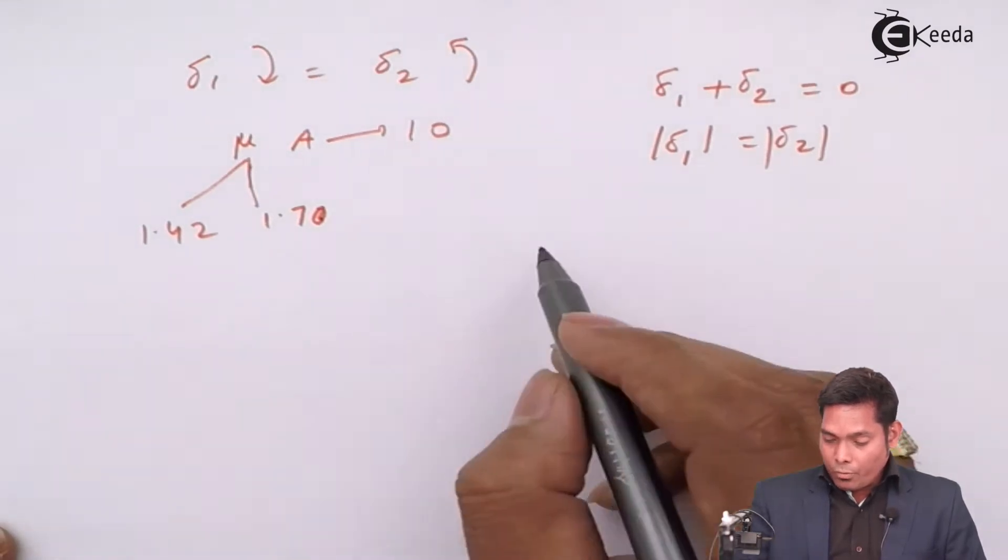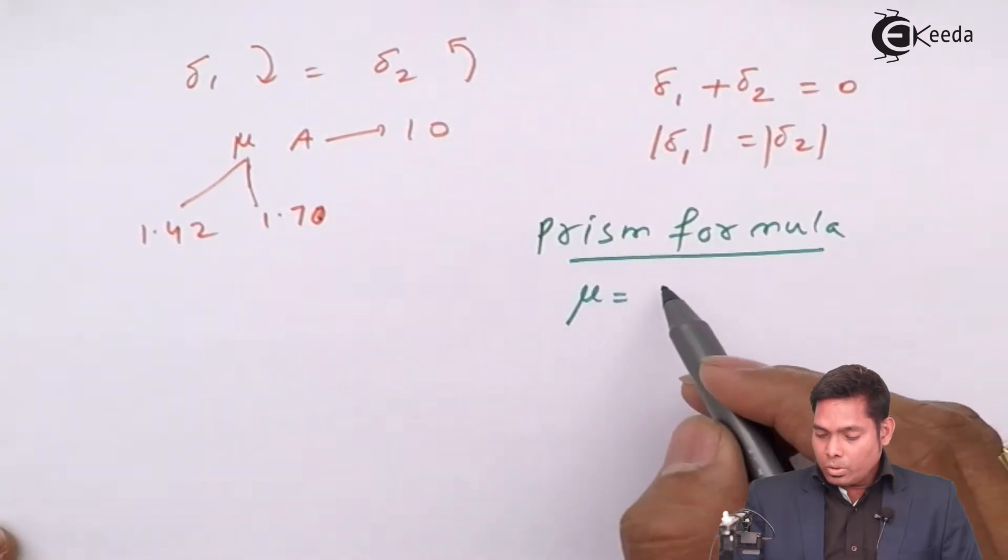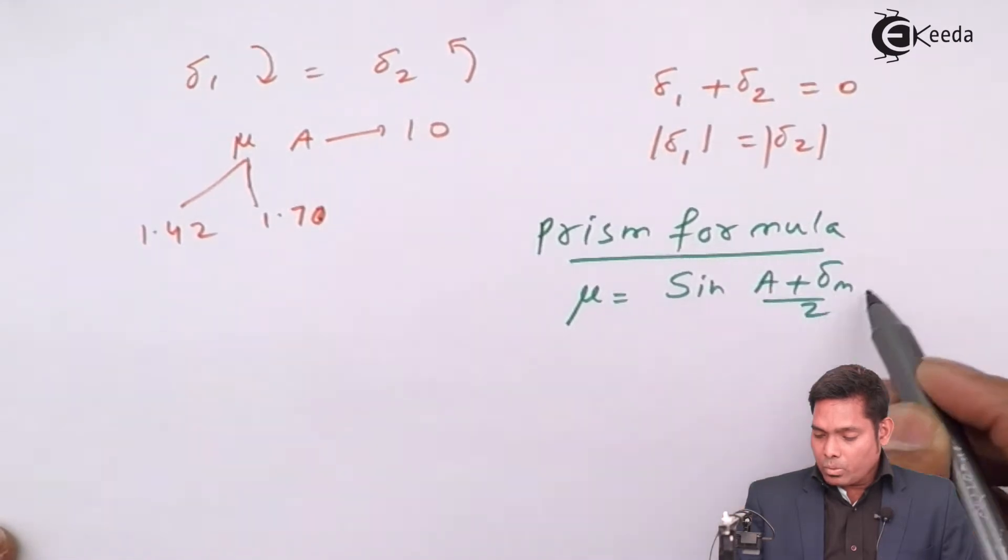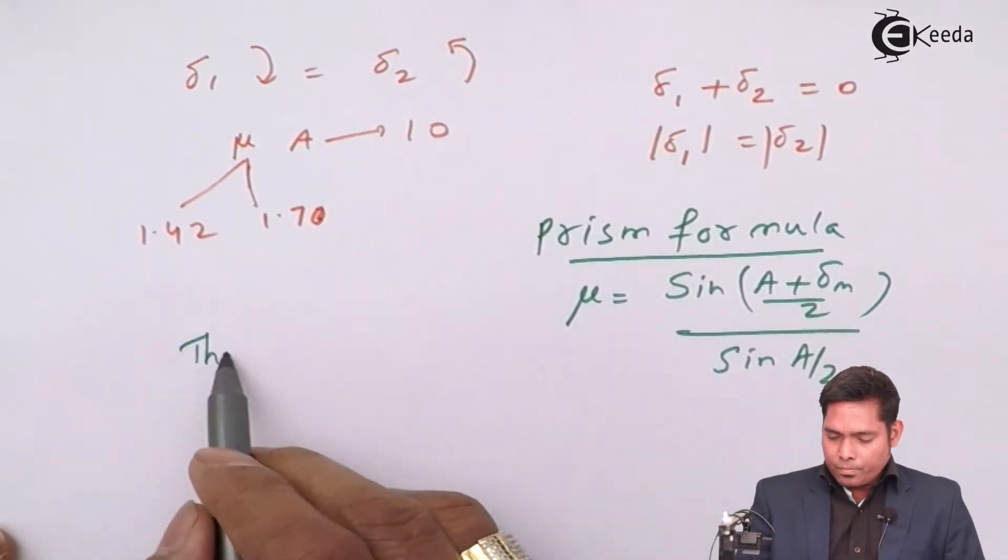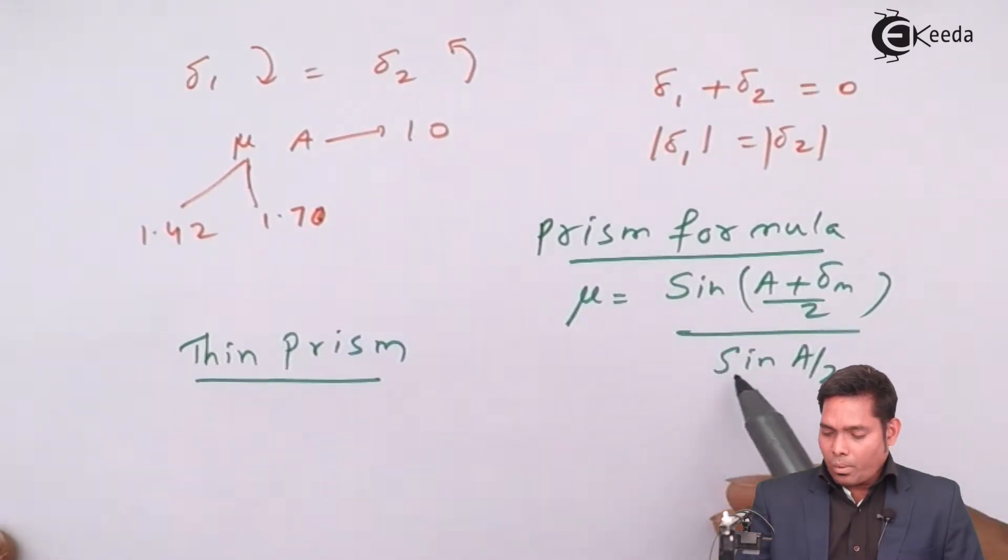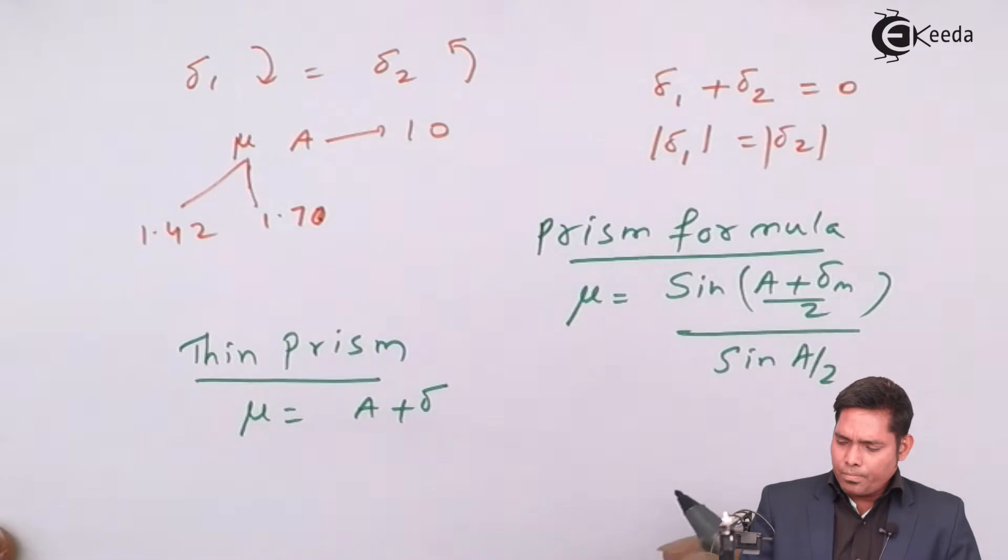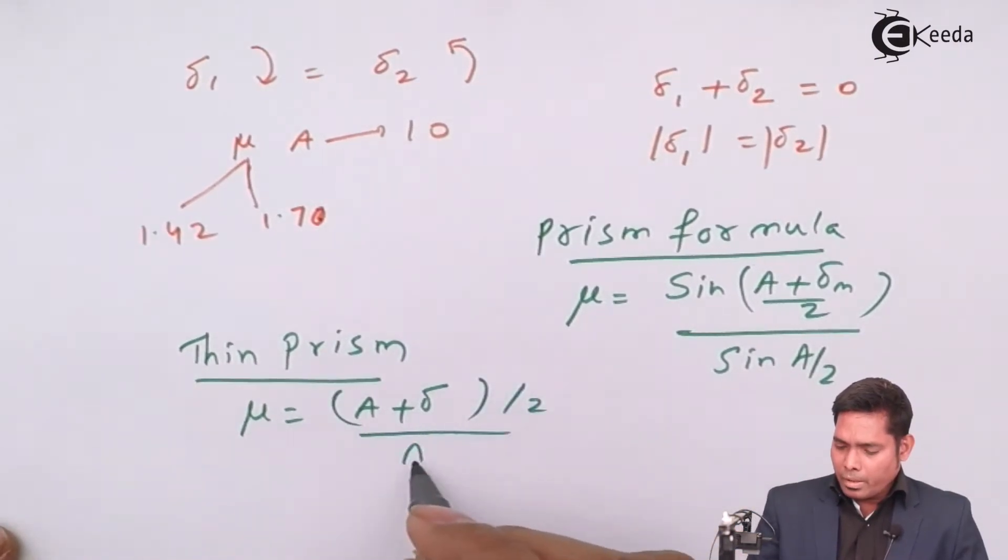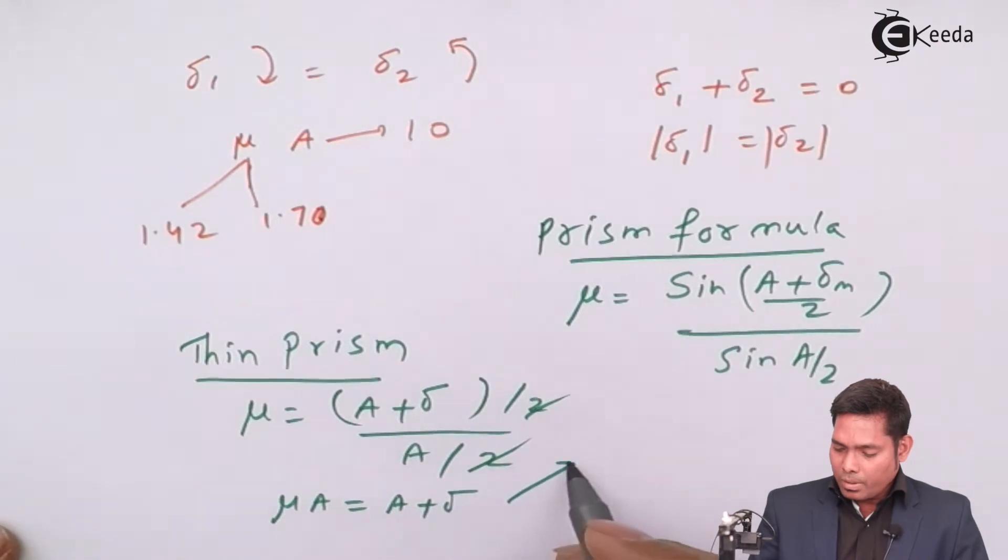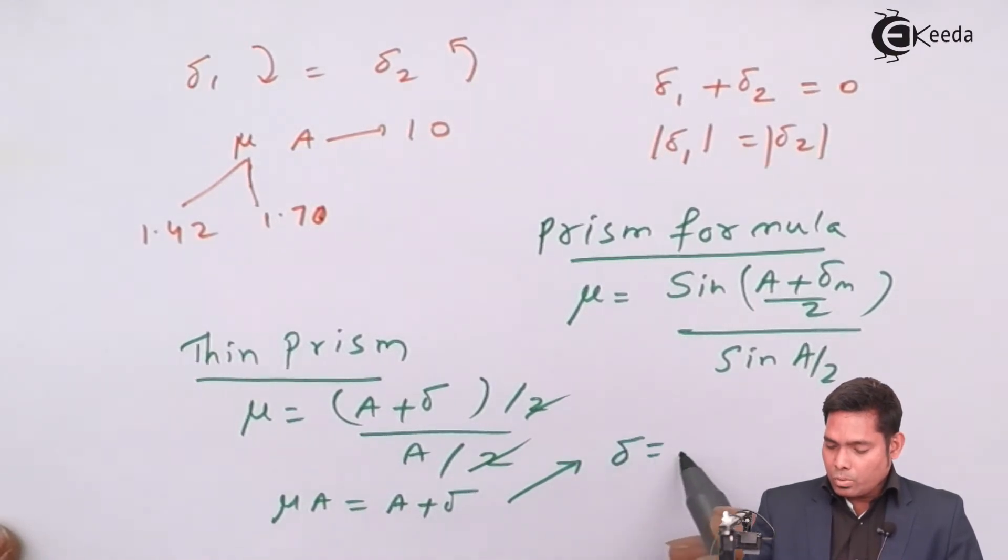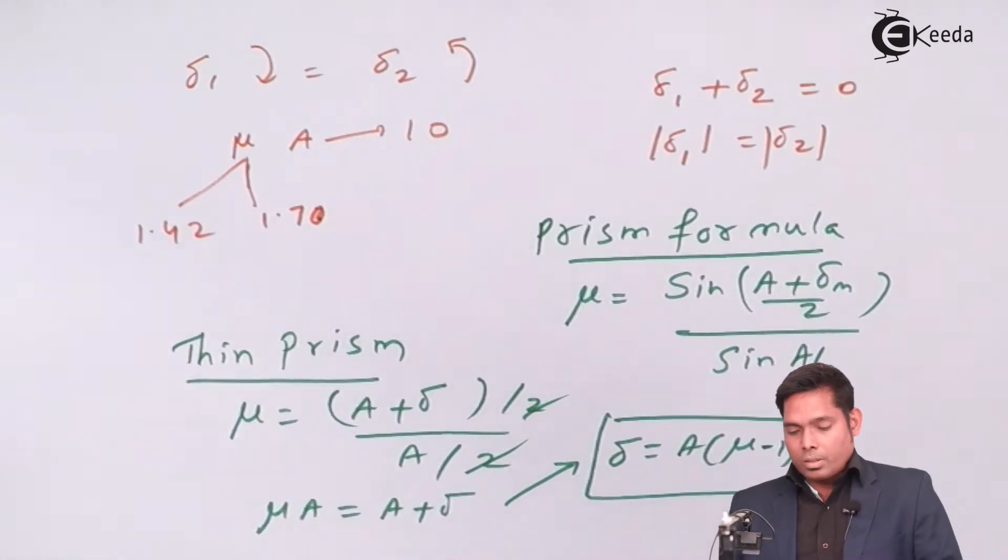How are they related? From prism formula, mu equals sin of (a plus delta m) divided by 2 divided by sin of a by 2. Because it is a thin prism, sin is dropped and mu is (a plus delta) by 2 divided by a by 2. This 2 will cancel. Cross multiplying, mu a is a plus delta. This implies that delta equals a into (mu minus 1). This is the working formula.